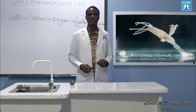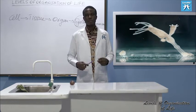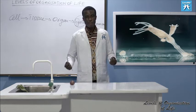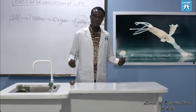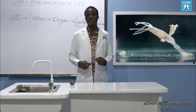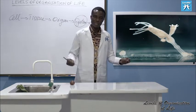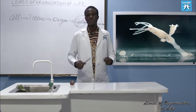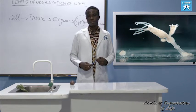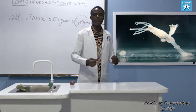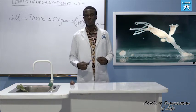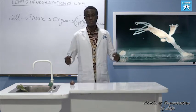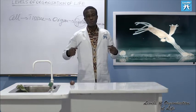For an organ: the leaf of a plant or the heart of a mammal. For a system in plants: the shoot system — what does it do? Photosynthesis, reproduction, excretion, transpiration. What about a system in animals? The digestive system — what does it do? Digestion of food, absorption of food.